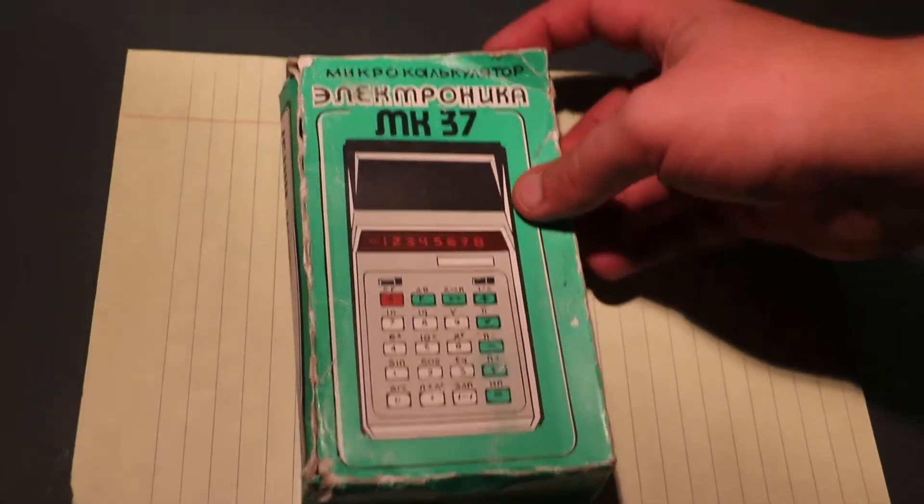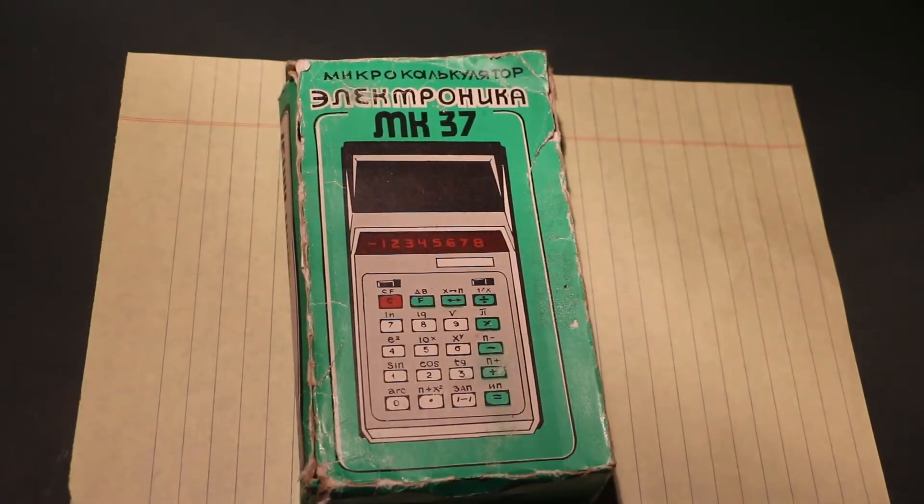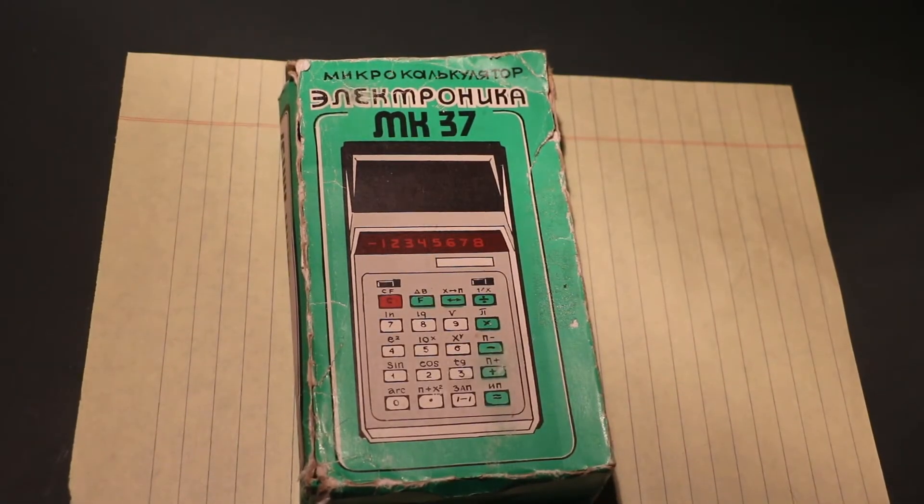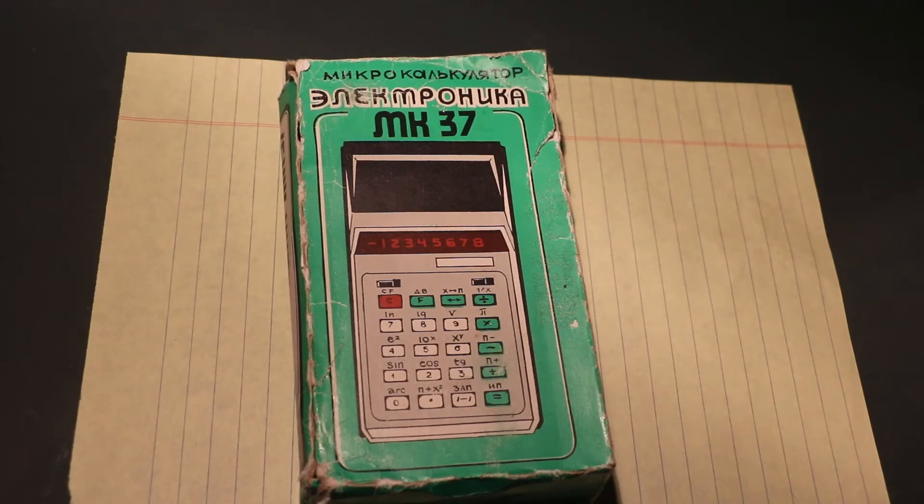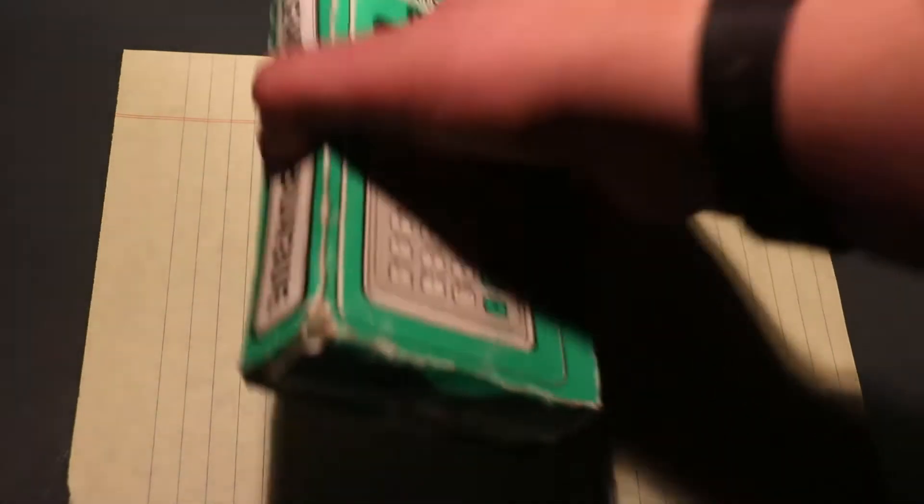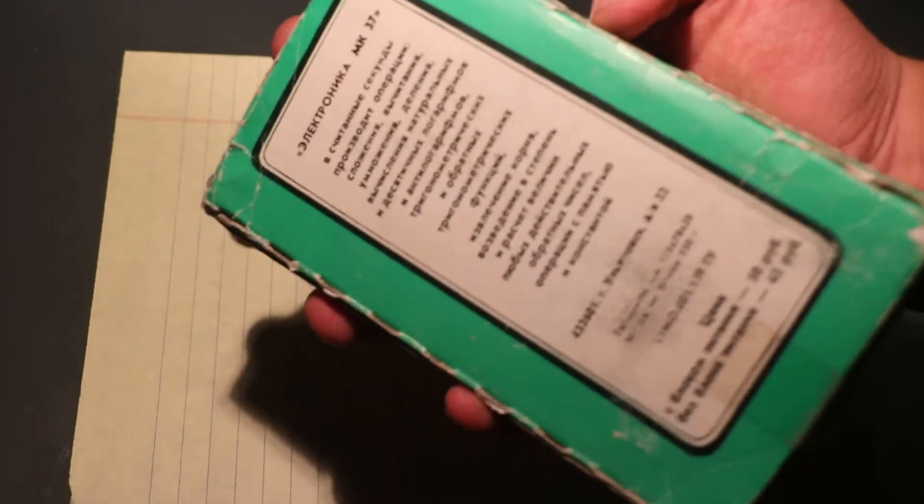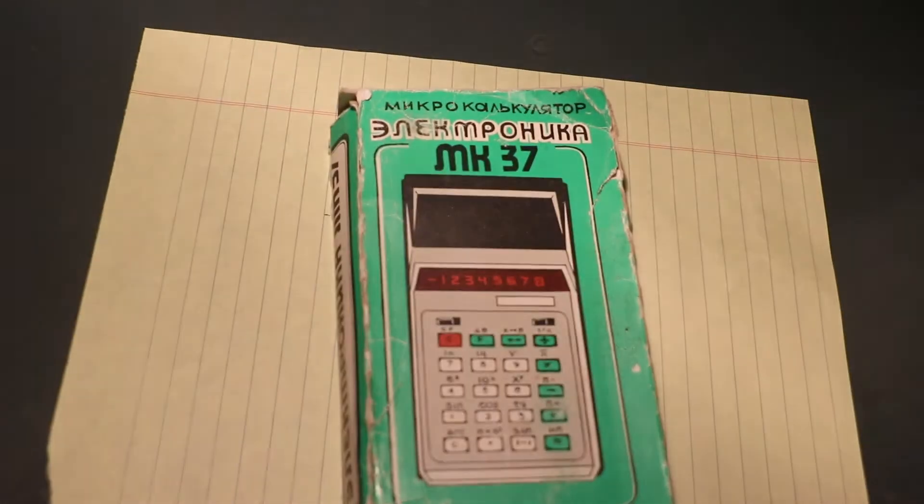But today, I'm going to be taking a look at the Electronica Mach 37 calculator. It's a Soviet-era calculator. This model is actually just the 37, not the 37A, and mine was produced in 1990, October 1990.